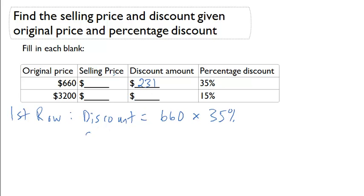To now get the selling price we can simply subtract. Selling price has to equal $660 minus the discount. And the discount of $231 will give us a selling price of $429.